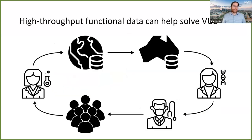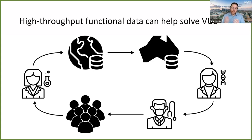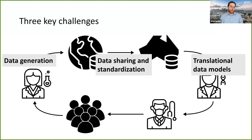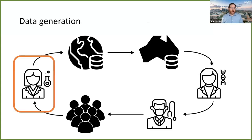High-throughput functional data can help solve the problem of variants of uncertain significance. The data needs to get into the hands of clinicians who need it. The flow is: researcher deposits data into a database, which flows into perhaps another local database, then into the hands of a variant curation scientist who returns results to a clinician, who passes information back to patients, and patient need drives future data generation. I'm going to tell you about the three key challenges we're working on: data generation, data sharing and standardization, and building translational data models.